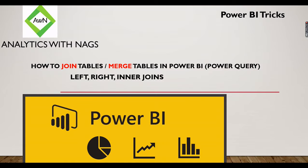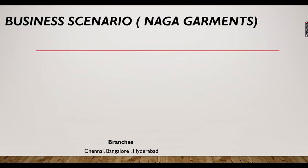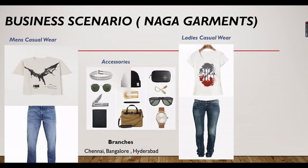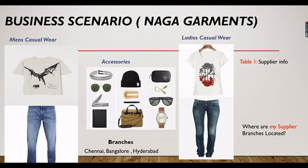How to join tables in Power BI — equivalent to SQL left, right, and inner joins. Business scenario: Naga Garments maintains supplier information and received a request to know what branches suppliers maintain. There's a new Supplier Branches table. You need to join Supplier and Supplier Branch tables to combine information from both places.